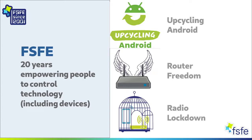Software freedom is dependent on how freely users can run software on their devices. It is insufficient that gatekeepers merely do not interfere with users' choices — users must be free to use operating systems and applications of their choice, and hence remove applications they do not want. Since its genesis, the FSFE has been working to put control over technology in the hands of end users. Our newest campaign, Upcycling Android, although concentrated in sustainability, intersects with several components of device neutrality, including the freedom to install and run software on general purpose computers and full interoperability based on open standards.